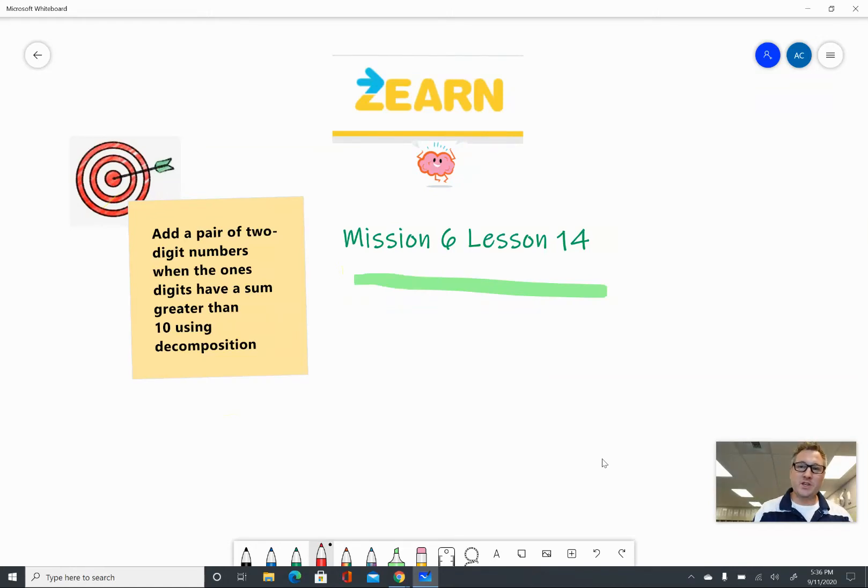Welcome back, my mathematicians. Today's lesson, Zearn Mission 6 Lesson 14, focuses on adding a pair of two-digit numbers when the one's digit has a sum greater than 10 by using decomposition.